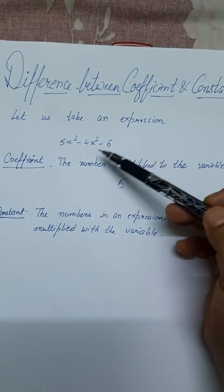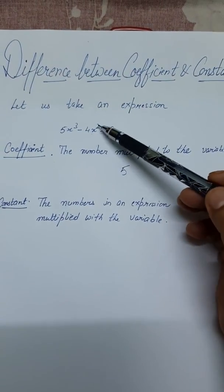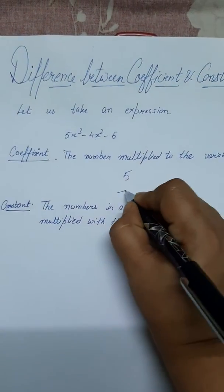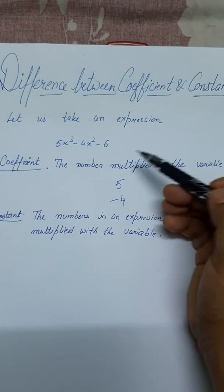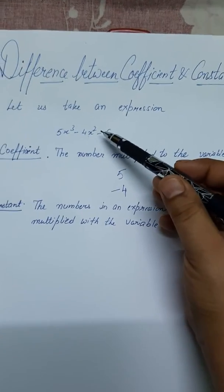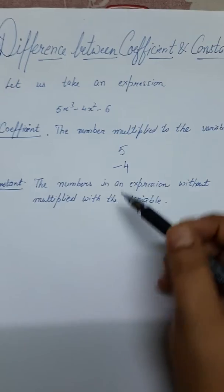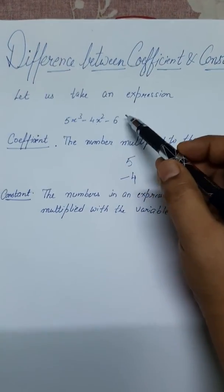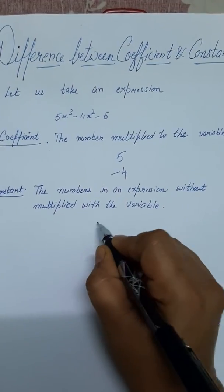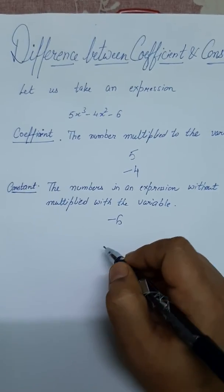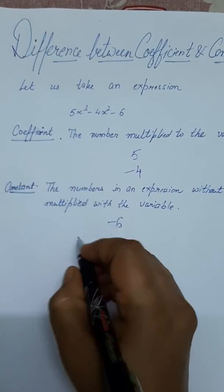If we're asked the coefficient of x², x² ka coefficient will be -4. And -6 is not a coefficient, it is a constant. It's a constant because it's not attached to any variable.